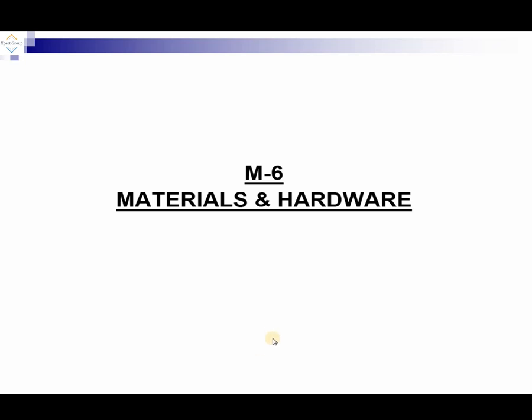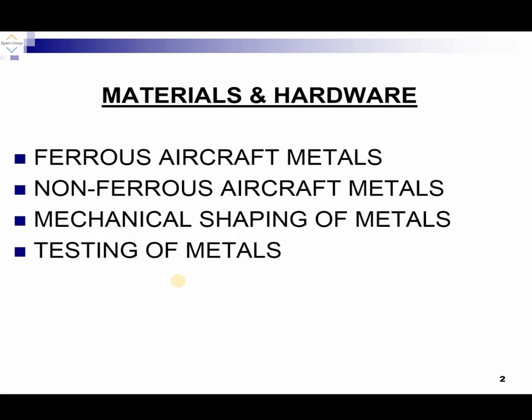Welcome, aviation students. In today's series of lectures we would start Module 6, that is Materials and Hardware. It is very important that we must have a good knowledge about the materials and hardware related to aircraft. Materials are the main constituents of the aircraft — these can be ferrous aircraft metals, non-ferrous aircraft metals, and composite materials used for the construction of aircraft.